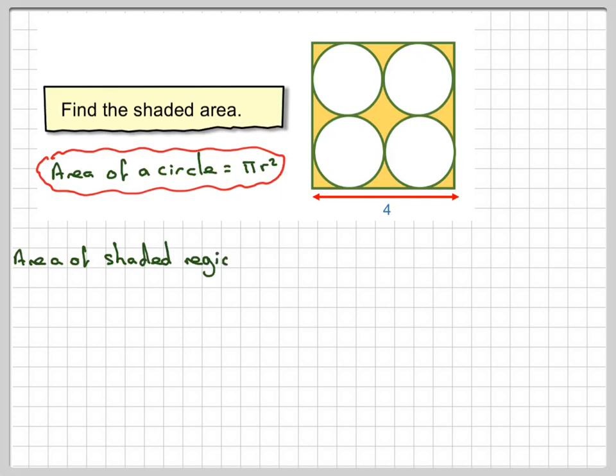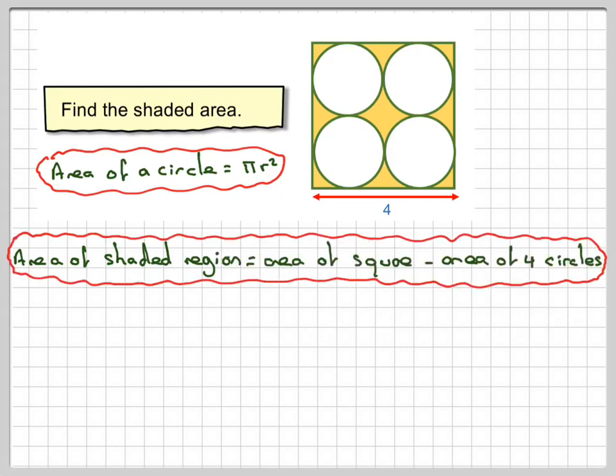Now, the area of the shaded region will be the area of the square minus the area of the four circles. That will give me the shaded region.